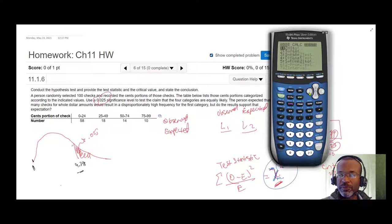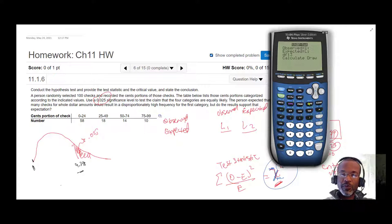We'll skip over here. Let's jump over to our chi-squared goodness of fit test. We have list one observed, list two 25, 25, 25, 25—those are the expected—degrees of freedom three. We're going to go ahead and calculate, and it tells us that our test statistic is 59.36.